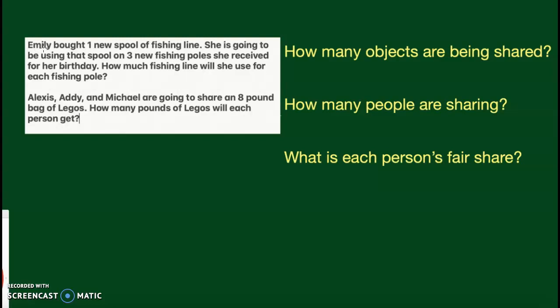So first problem, Emily bought one new spool of fishing line. She is going to be using that spool on three new fishing poles she received for her birthday. How much fishing line will she use for each fishing pole? So let's come over here and look at our questions. And our first question is how many objects are being shared? Well according to this problem it's one and it's the one new spool of fishing line. That's what's going to be shared.